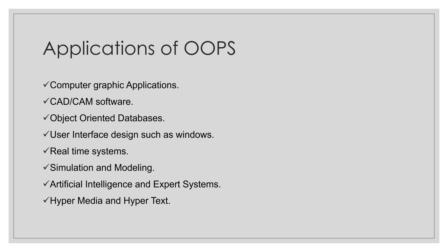Seventh, artificial intelligence and expert systems — these are computer applications developed to solve complex problems in a specific domain, far beyond the reach of a human brain. They have characteristics like being reliable, highly responsive, understandable, and high performance.